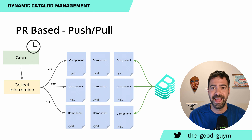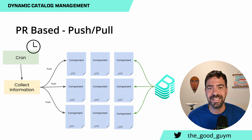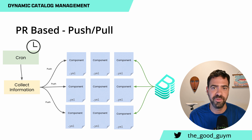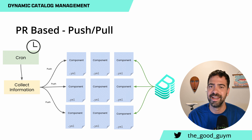Another approach is the pull approach, which is more cron-based. Using this approach, a cron job crawls across all of your repositories or organization — whatever you define — and syncs the catalog information with your Git information. Git remains the source of truth, and the cron pulls the information on a scheduled basis. Depending on the organization's pace of development, it can run every 5, 10, 15 minutes, or an hour — querying all repositories and updating the software catalog.